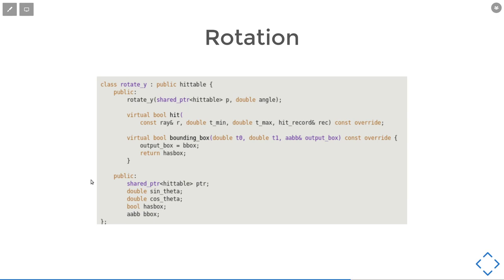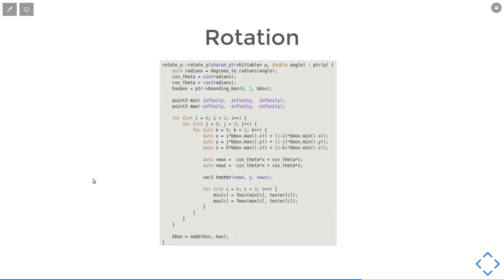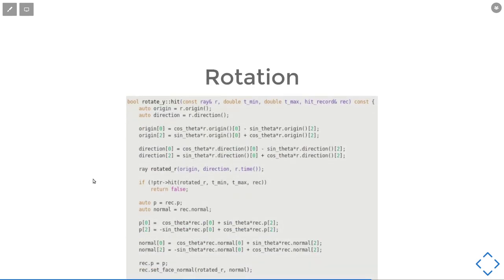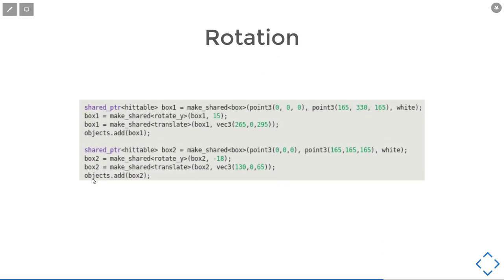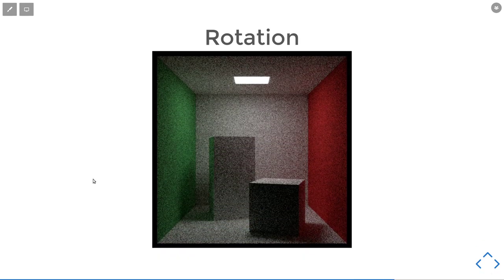For example, if we want to have a rotate Y transformation, what we need to do is just pass the angle into the constructor. Then in the constructor what we will do is pre-calculate the sine and cosine of the angle and also transform the bounding box. Finally, in the hit function, we will just do the math we showed above. After we have done that, we can add rotate Y to the box, and then we will have this thing with two rotated boxes.